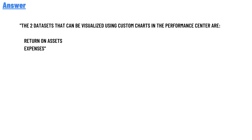The correct answer is the two data assists that can be realized using custom charts in the performance centers are: returns on assets and expense.